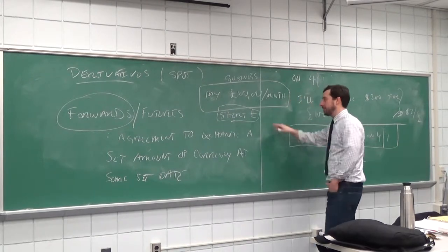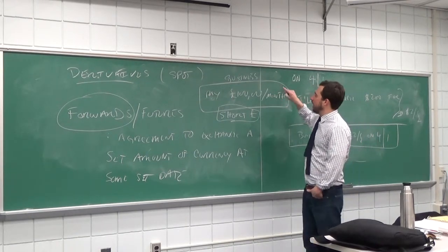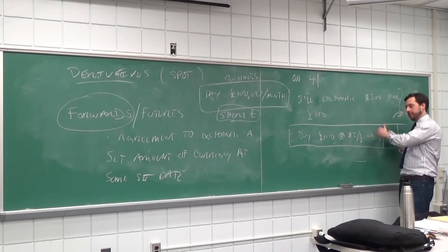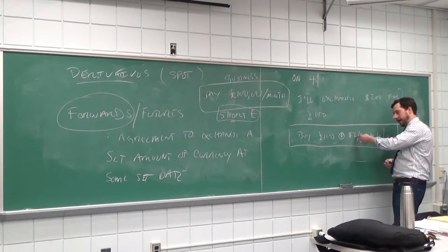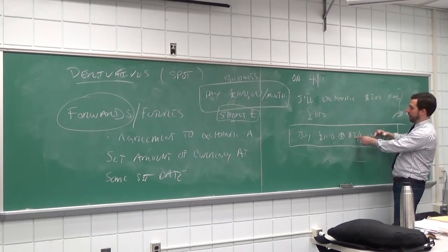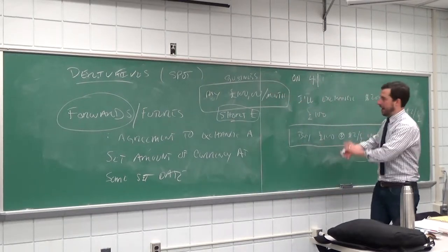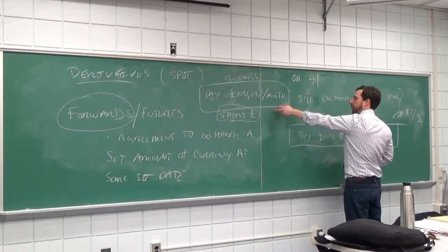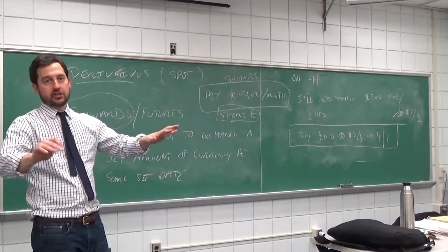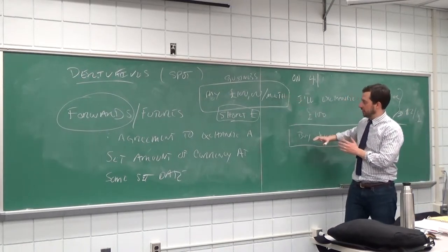If the pound goes up in value, I lose money because it takes more US dollars to buy a pound. So through the course of my business I'm short pounds — what I'd want to do is buy pounds forward. Buying pounds forward is long the pound: if the pound goes up I make money on the forward. For example, if the forward contract is two dollars per pound and the pound rises to two dollars and ten cents, I'm very happy buying at two dollars instead of the new spot rate. If I'm short through my business and go long on a forward contract, the two risks offset and I'm hedged.